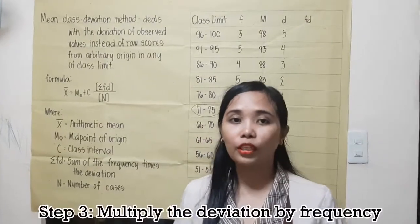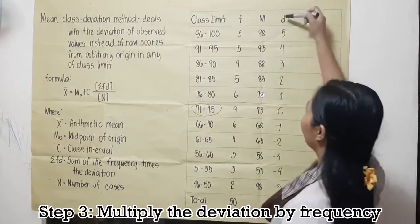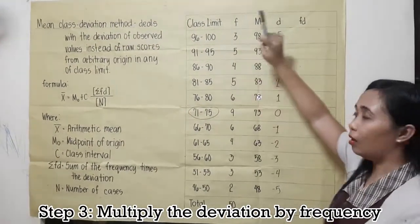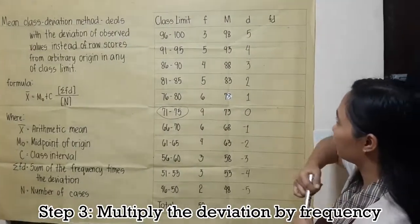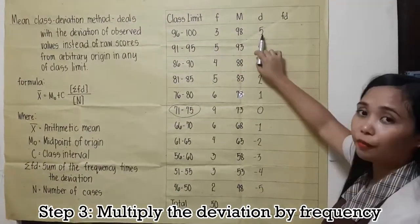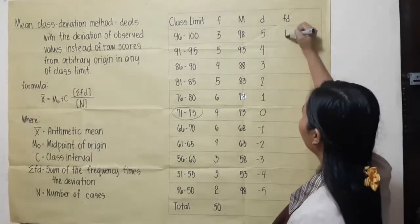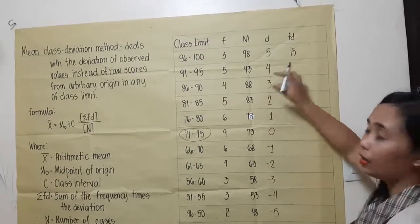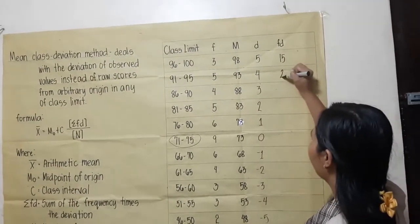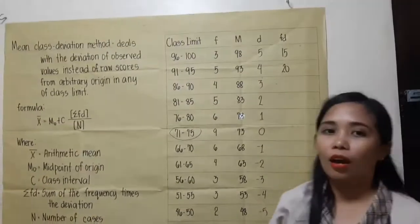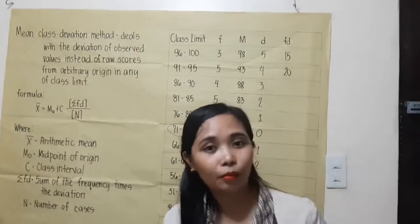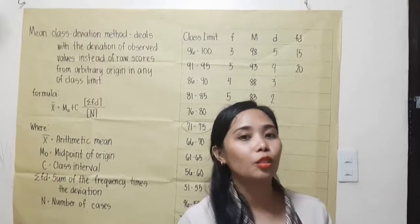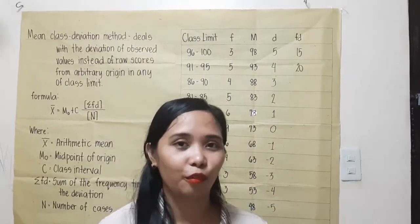For step 3, we need to multiply the deviation by its corresponding frequency. For example, 3 times 5 is 15; 5 times 4 is 20. Just like before, I will give you time to complete this column. You may pause this video and come back as soon as you finish.